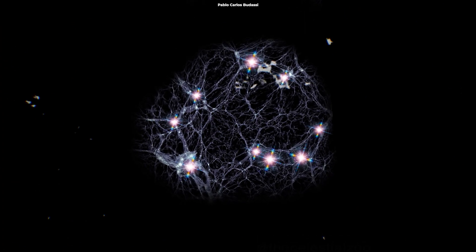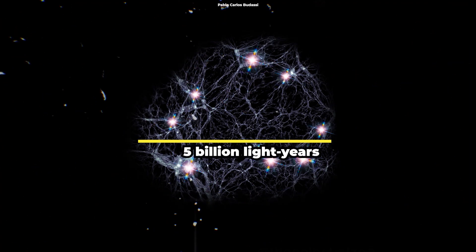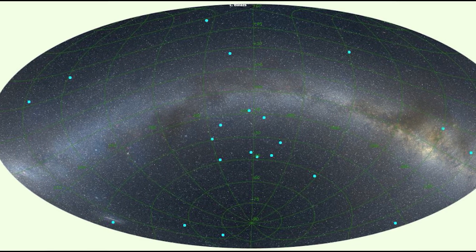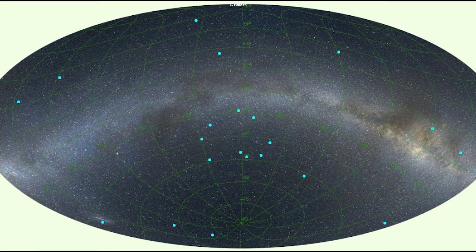The Giant GRB Ring has a staggering diameter of about 5 billion light-years, making it one of the most massive structures known to exist in the universe. This colossal ring consists of nine Gamma Ray Bursts, forming a circle that spans a mind-boggling distance.